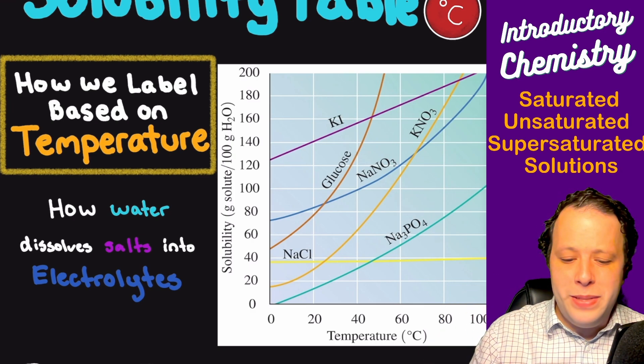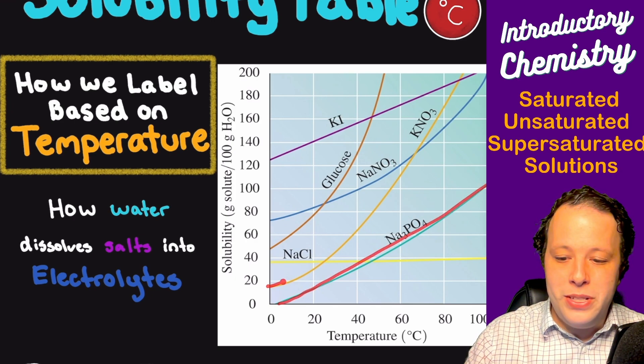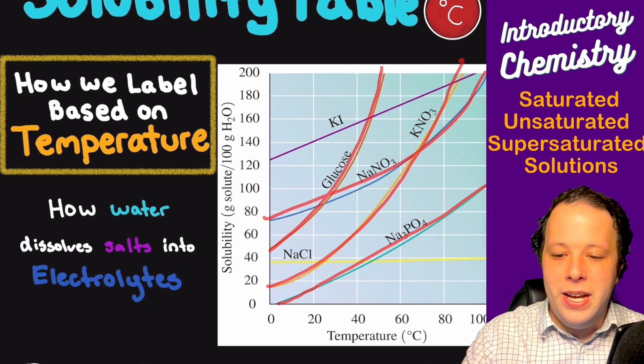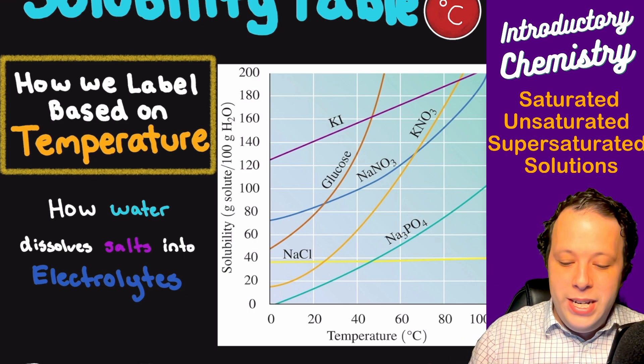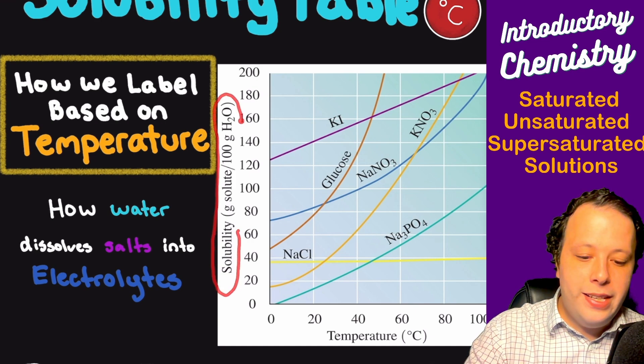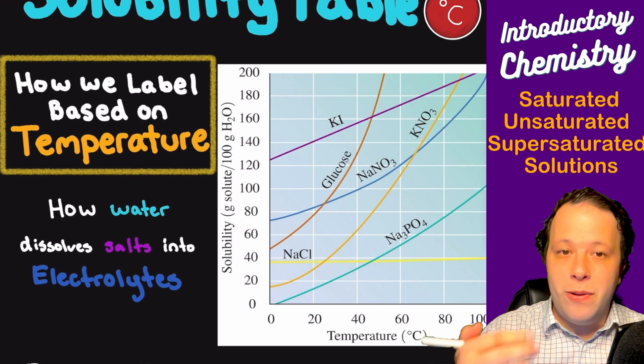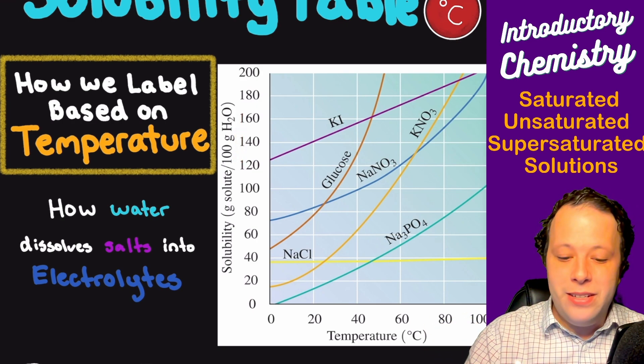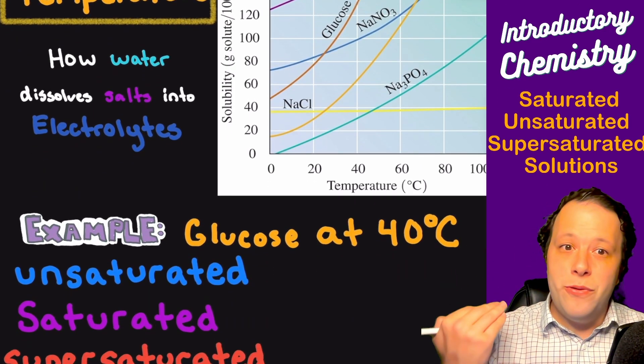It's all about how water dissolves these salts into their electrolytes. Every single one of them is different. Salt is relatively a straight line. Sodium phosphate is going up. KNO3 is going straight up. Glucose is here and all of them have their own unique trend to them. The x-axis is temperature. The y-axis is solubility, meaning how many grams of your solute can dissolve for every 100 grams of solvent. If we were to read this we can label what a solution is.